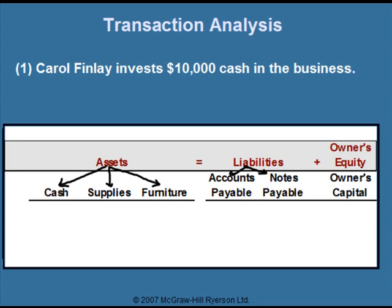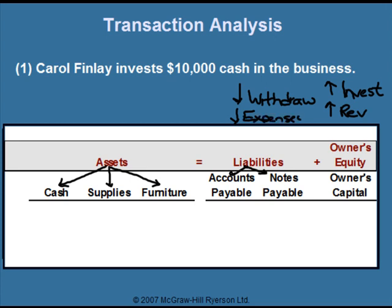Remember that capital changes for four different reasons: it goes up when the owner invests money in the company, it also goes up when the company has revenues, it goes down when the owner takes money out of the company — a withdrawal — and it also goes down when the company has expenses or costs of producing those revenues. So in order to put something under the capital column, it has to be for one of these four reasons.